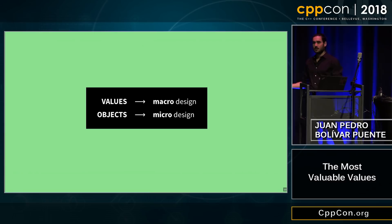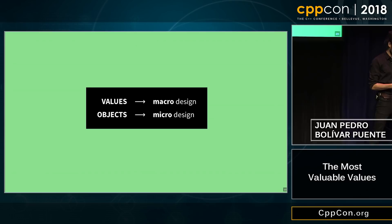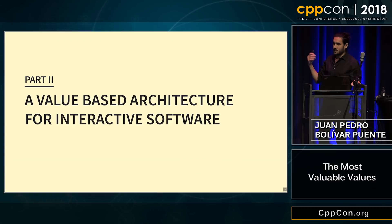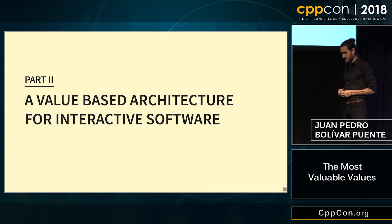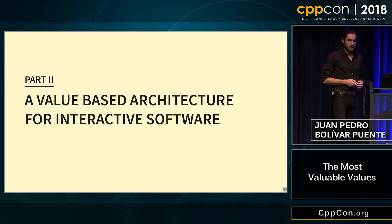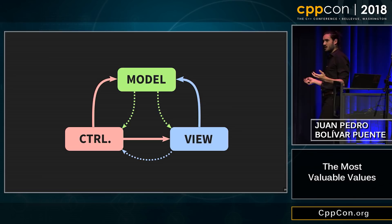The second part of this talk is going to exercise these ideas by talking about a value-based architecture for interactive software. And interactive software is interesting — we've been doing this for many years already, 30, 40 — and there are some very established architectures and patterns that you use, even though anybody that has written big interactive software knows they are widely unsatisfying.